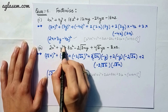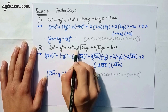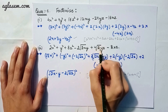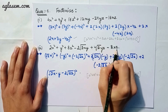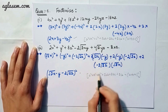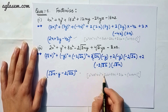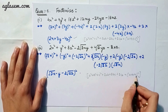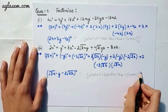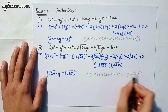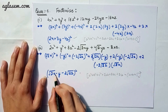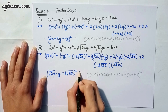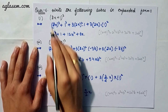Moving to our second part: 2x² + y² + 8z² − 2√2 xy + 4√2 yz − 8xz. Applying the same identity (a + b + c)² = a² + b² + c² + 2ab + 2bc + 2ca, the answer is (√2 x − y − 2√2 z)².